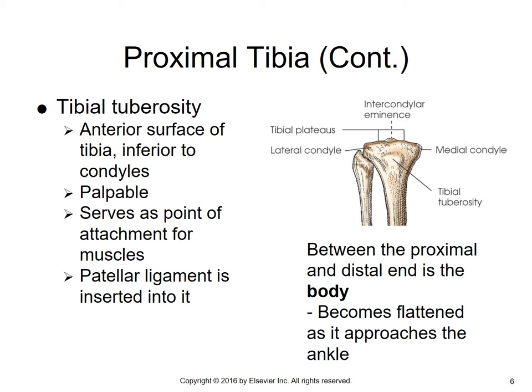Anteriorly, but still proximally, is something called the tibial tuberosity. It's on the anterior surface of the tibia, slightly inferior to the condyles. It's very palpable and serves as the attachment for muscles. The patellar ligament is actually inserted into it. This tuberosity becomes important in a pathology called Osgood-Schlatter's disease, in which the tibial tuberosity actually breaks away from the body of the bone.